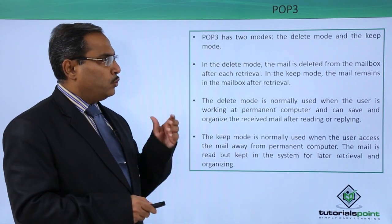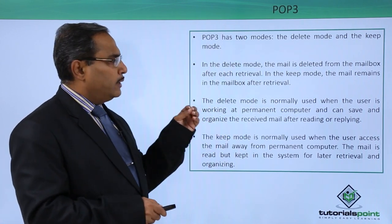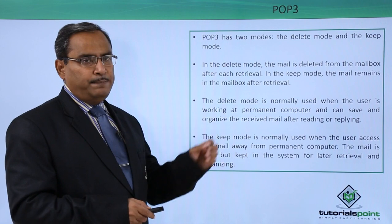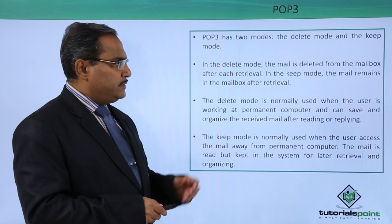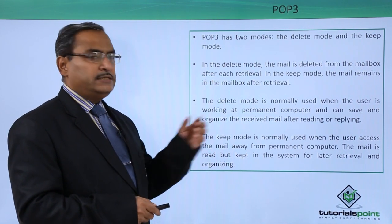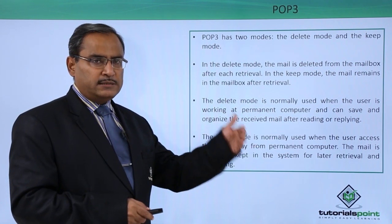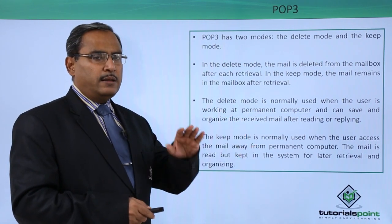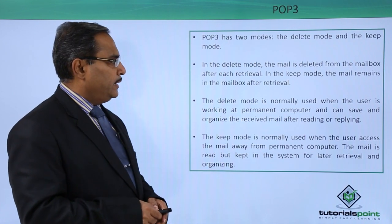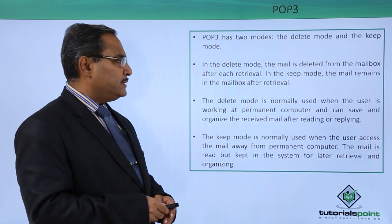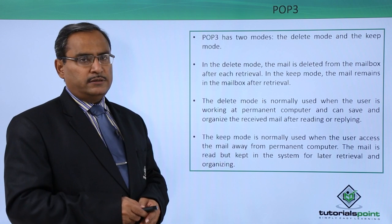POP3 has two modes: one is the delete mode and the other one is the keep mode. In the delete mode, the mail is deleted from the mailbox after each retrieval — the mail will get deleted at the mail server's end when it is retrieved. In the keep mode, the mail remains in the mailbox even after retrieval.